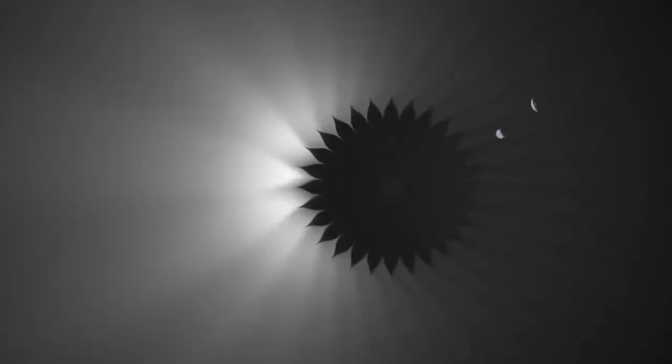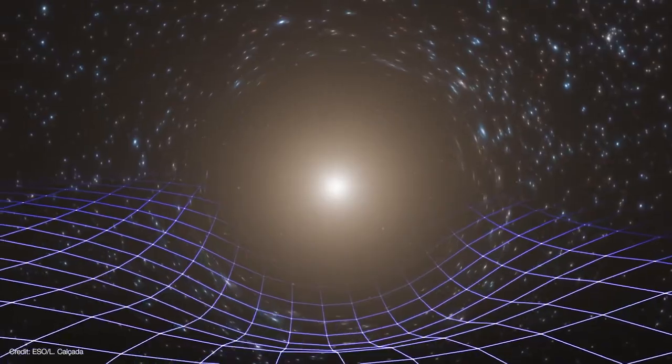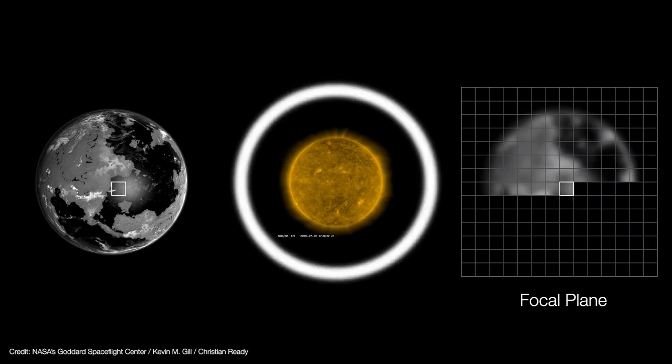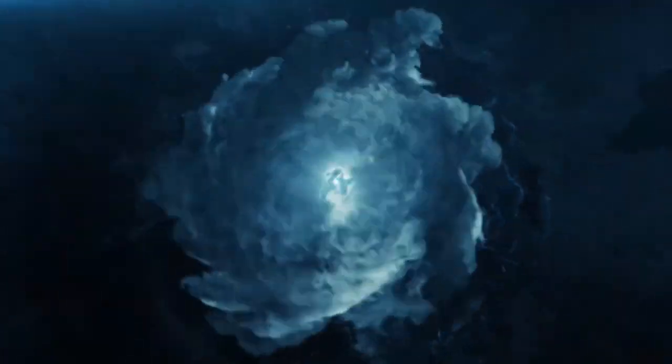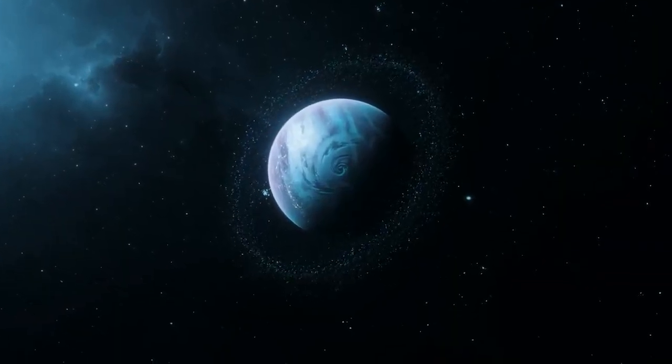This wild idea, known as a solar gravitational lens SGL mission, may sound like an Einsteinian fever dream, but scientists have now found that it is feasible with technologies that are either extant or in active development, according to a new study. An SGL mission could zoom in to see surface features of exoplanets, on scales of just tens of miles, which could provide smoking gun evidence of extraterrestrial life.